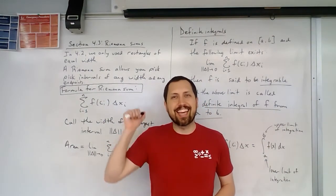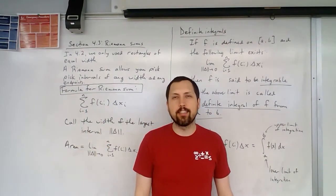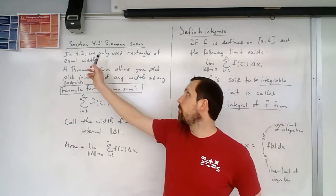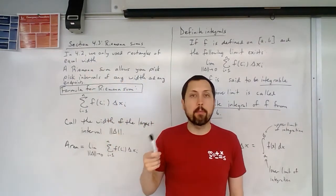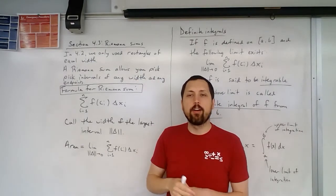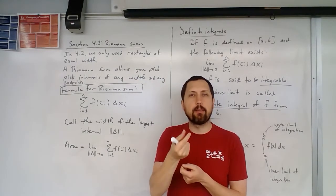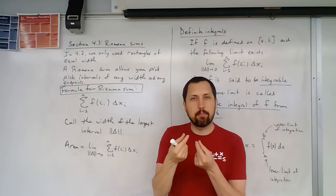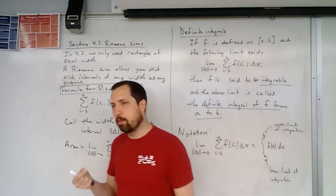Okay, so we're going to take a look at the next section, which is on Riemann sums. So in 4.2, when we were talking about areas, we used rectangles that had equal width. So we always had this width was going to be B minus A divided by N. It had the same exact width. And then we were able to approximate our areas.